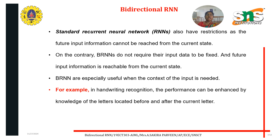Standard recurrent neural networks also have restrictions, as future input information cannot be reached from the current state. On the contrary, BRNNs do not require their input data to be fixed, and future input information is reachable from the current state. BRNNs are especially useful when the context of the input is needed — for example, in handwriting recognition, performance can be enhanced by knowledge of the letters occurring both before and after the current letter.